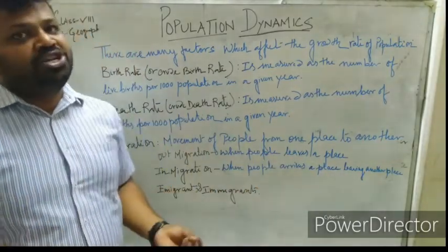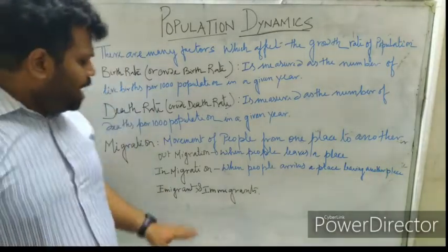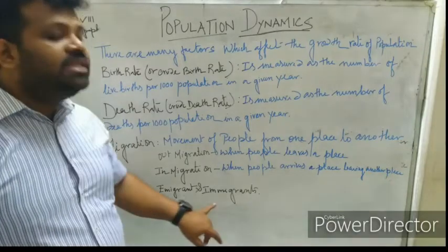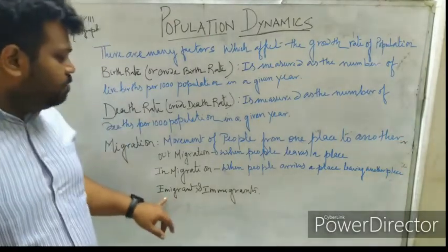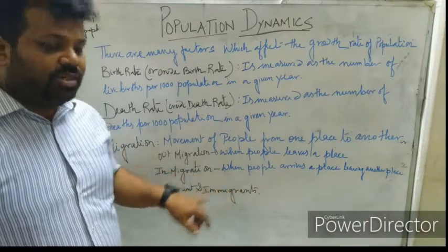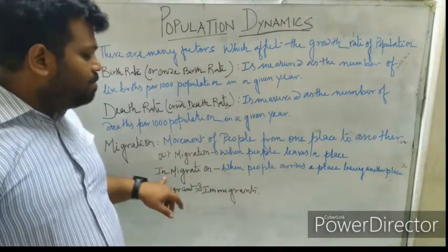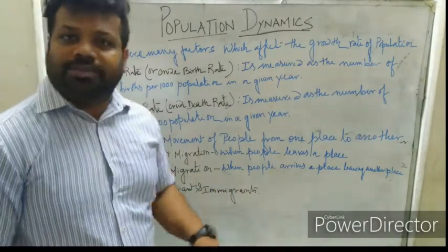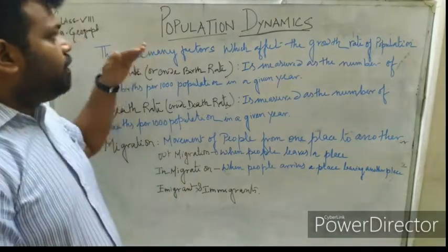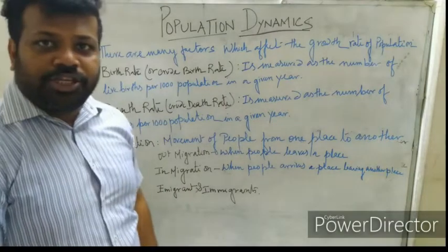The person who does out-migration is called an emigrant. The person who does in-migration is called an in-migrant. So this is about the factors which affect the growth rate of population — birth rate, death rate, and migration.